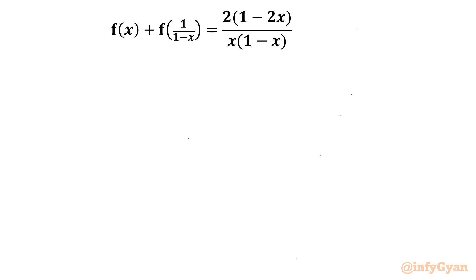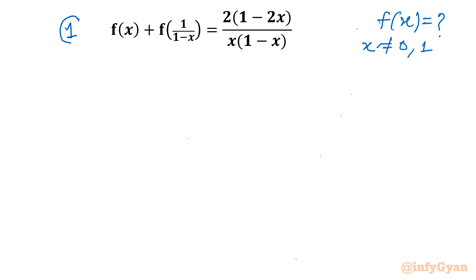Welcome to Infigyan, my dear friends. Today in this video we are going to take up one very interesting functional equation problem. It is f(x) + f(1/(1-x)) = 2(1-2x) / (x(1-x)). We have to find out the function f(x), given that x cannot be 0 and cannot be equal to 1, since the denominator cannot be 0. So let's begin with writing the given equation as equation number 1.